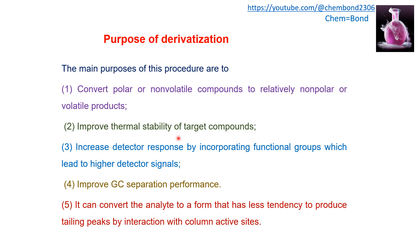Derivatization will also improve the thermal stability of the target compound. Another purpose is to increase detector response by incorporating functional groups which lead to a higher detector signal. There are a variety of substituents containing electronegative halogen or nitro groups that, when incorporated into the analyte molecule, increase the detector signal — for example in ECD, the electron capture detector, which detects compounds containing electronegative atoms such as fluoride, chloride, and bromide.